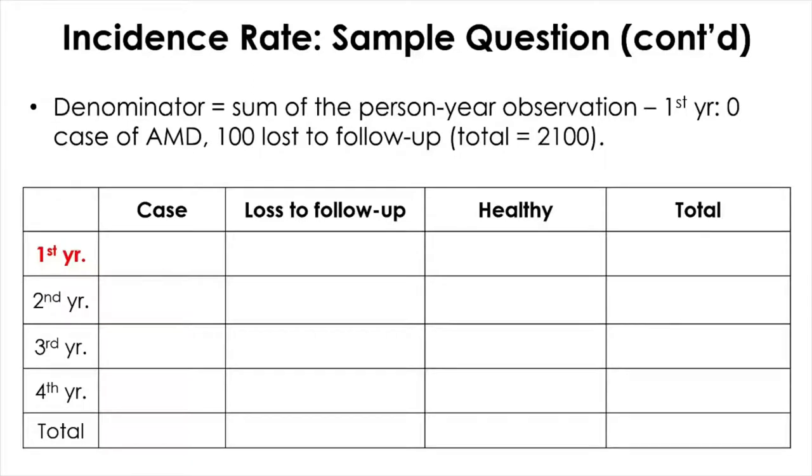The denominator is basically the sum of the person-year observation. Let's start with the first year. We do not have a case of AMD, so there's no contribution. For lost to follow-up, we had 100 lost to follow-up, but because we do not know exactly when these people were lost, we're going to assume, as a conservative guess, a kind of imputation. They're going to just contribute half a year. So this is going to be, by convention, how people impute the data. That's 50 years.